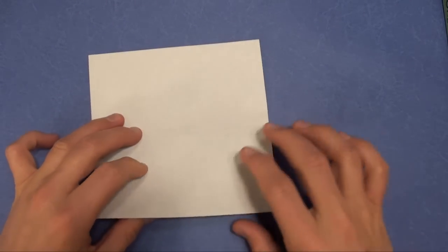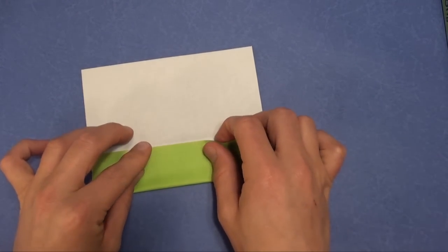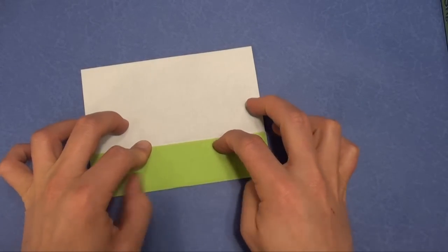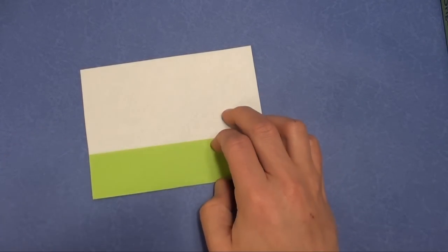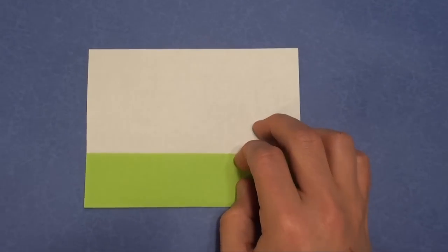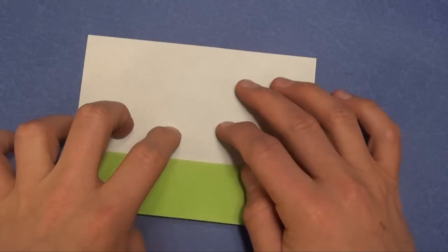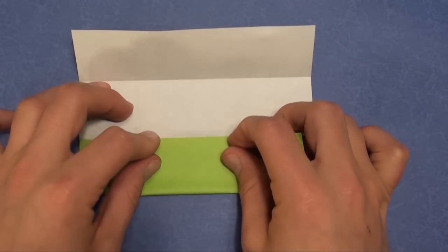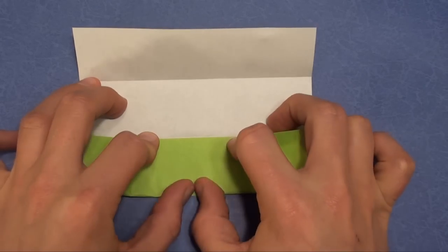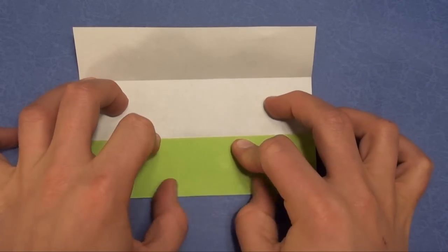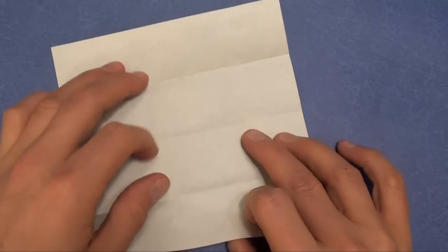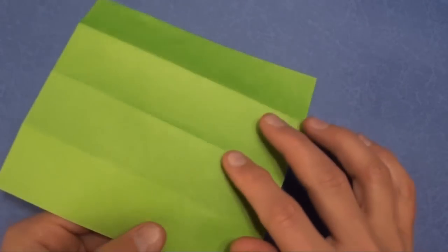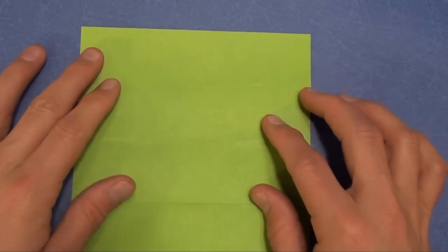And fold the bottom edge up to the crease. I'm going to zoom in a little bit. And turn around and fold the other edge up to the crease. And then fold.